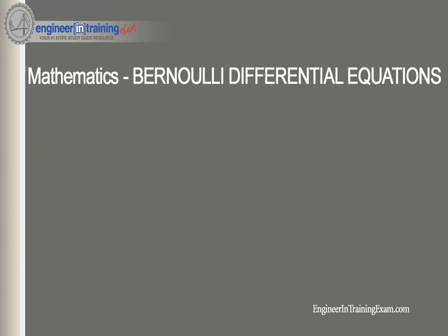A Bernoulli differential equation takes the form y prime plus p(x)y equal q(x)y to the n, where p(x) and q(x) are continuous functions on the interval we are working on, and n is a real number. Equations in this form are known as Bernoulli equations.